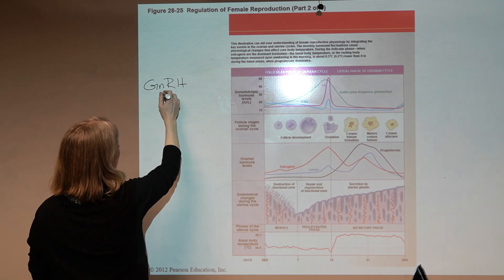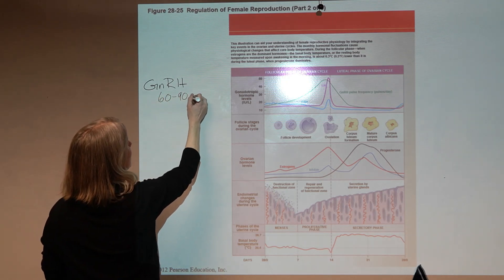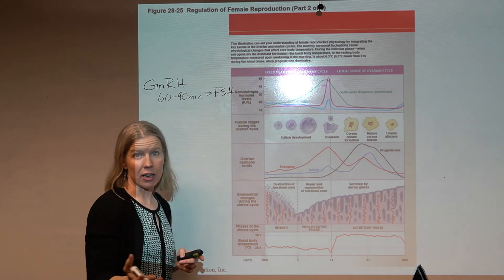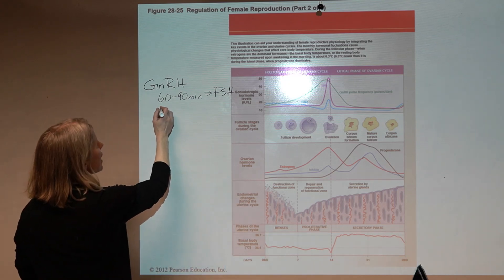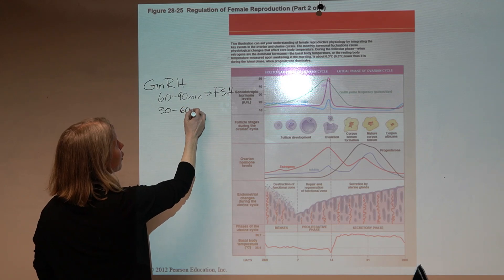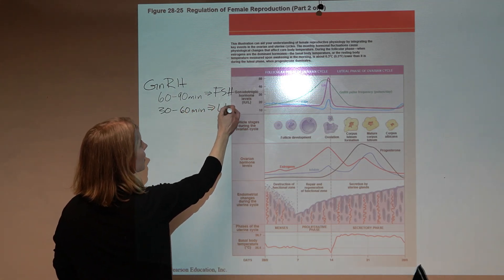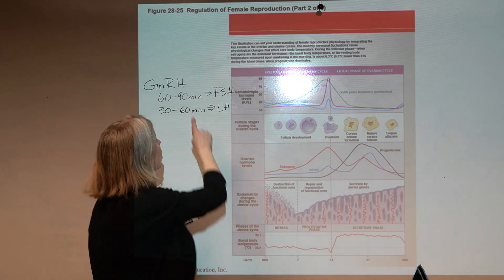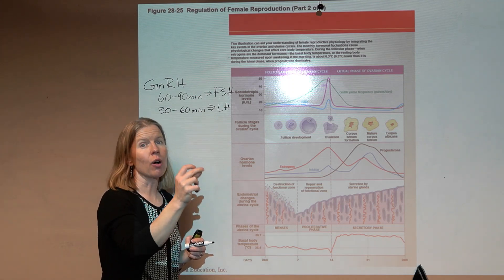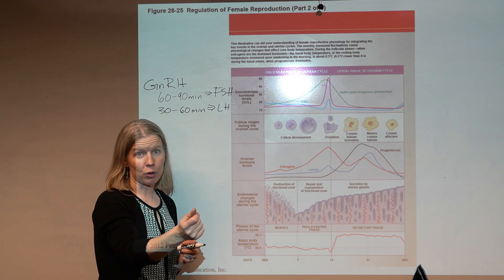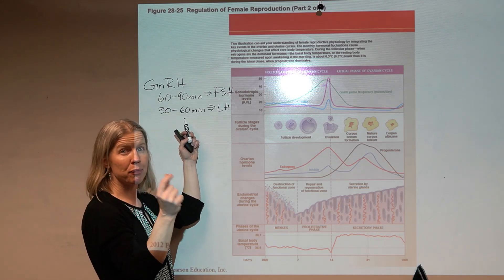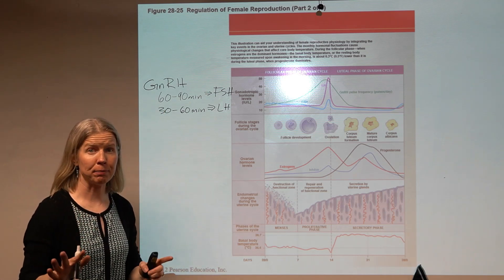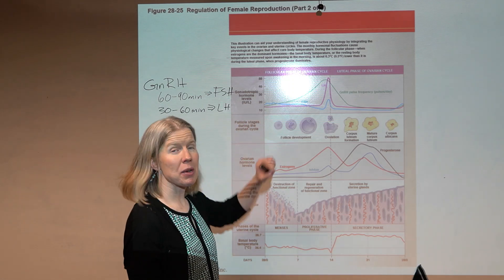If there's a GnRH pulse every 60 to 90 minutes, that leads to the release of FSH — follicle stimulating hormone — from the pituitary gland. If that speeds up to every 30 to 60 minutes, the pituitary releases luteinizing hormone instead. So slower pulses give follicle stimulating hormone; when the pace picks up, LH is released.